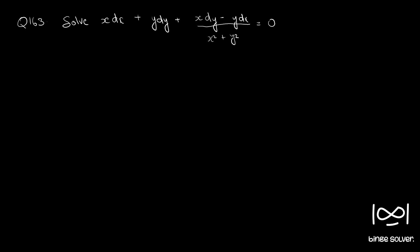Question number 163: solve x dx plus y dy plus (x dy minus y dx) divided by (x squared plus y squared) equals zero. We can bring all the dx terms together and rearrange.